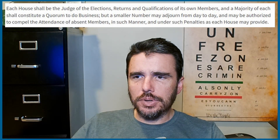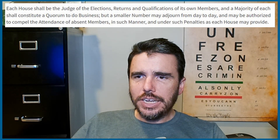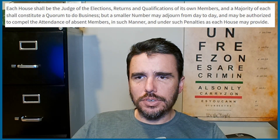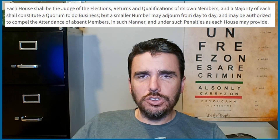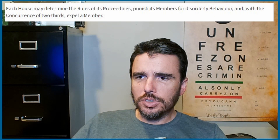Section Five states that each house shall be the judge of the elections, returns, and qualifications of its own members. A majority of each shall constitute a quorum to do business, though a smaller number may adjourn day to day. Each house may determine rules of its own proceedings, punish members for disorderly behavior, and with two-thirds concurrence expel a member — each chamber is responsible for self-policing.